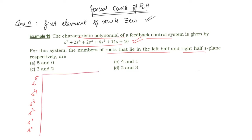The first two rows are straightforward. The first row starts from 1 — the coefficient of s⁵ — then 2 and 11. The second row starts from the coefficient of s⁴, which is 2, giving us 2, 4, and 10.